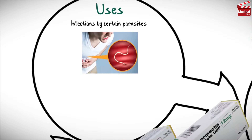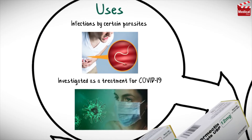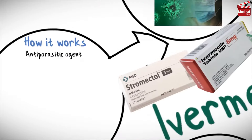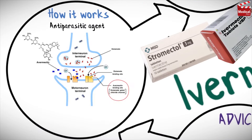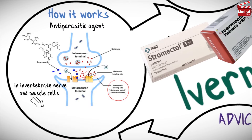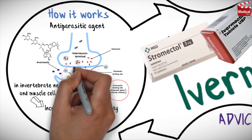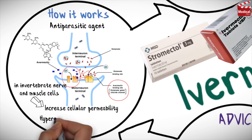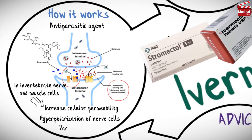Ivermectin is currently being investigated as a treatment for COVID-19. It binds to glutamate-gated chloride channels in invertebrate nerve and muscle cells, leading to increased cellular permeability, hyperpolarization of nerve cells, paralysis, and death.